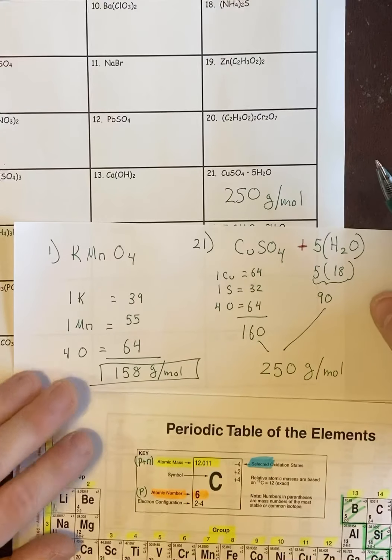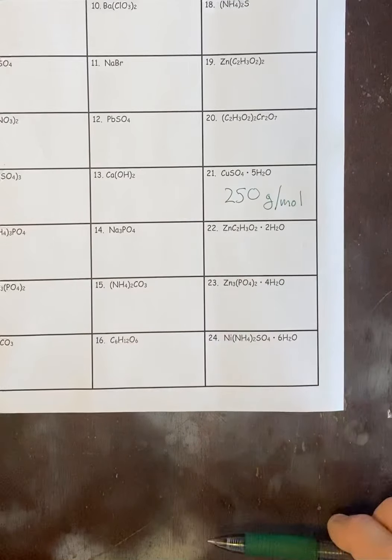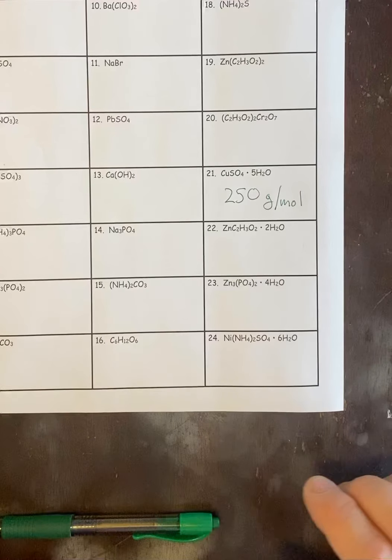But that's how you do all of the hydrates. So that's going to be 21, 22, 23, and 24—they're all going to be done like that. And they're all different hydrates. And that's how you do this sheet.